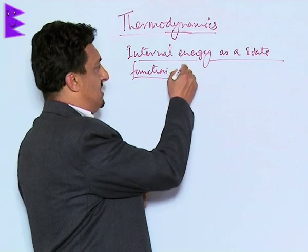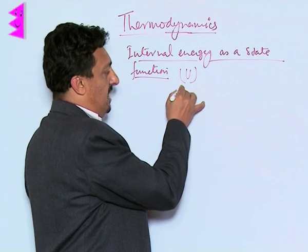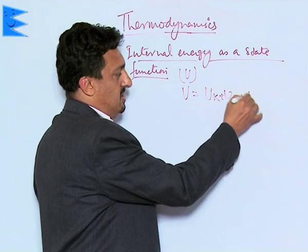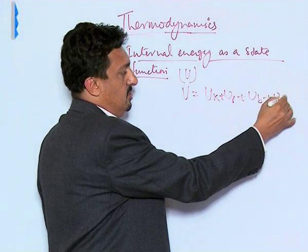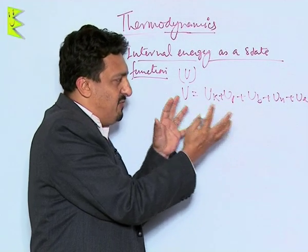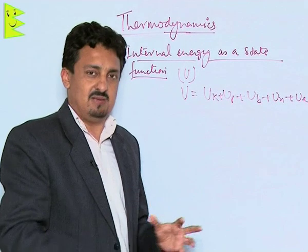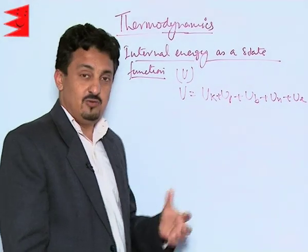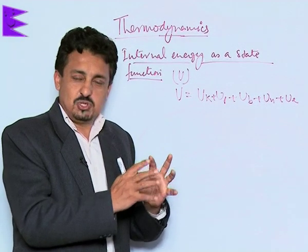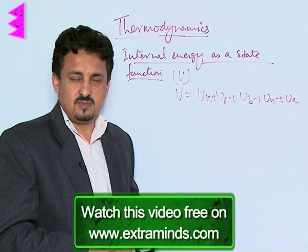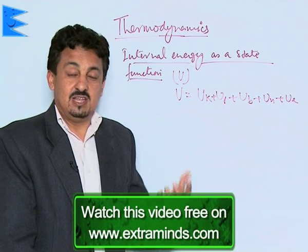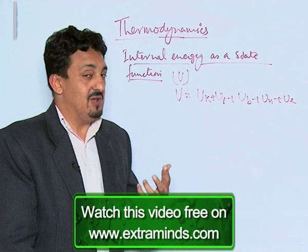We represent internal energy by the symbol U. U encompasses kinetic energy, potential energy, bond energies, nuclear energy, and electronic energy. Because we cannot determine the values of these five different energies simultaneously, we cannot find the absolute value of U — meaning we cannot find the total energy associated with any particular substance or system.